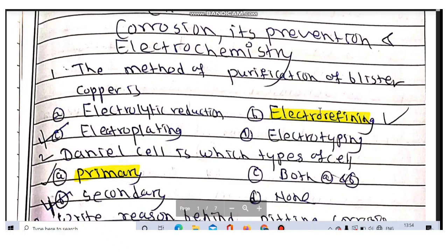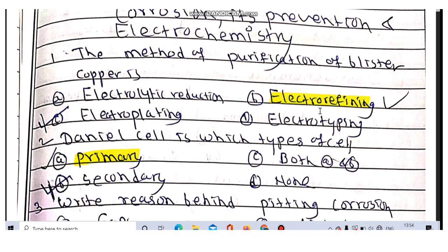Welcome students, now we are going to see some important MCQs for chapter 2 of basic chemistry. The name of the chapter is corrosion, its prevention, and electrochemistry. The first question is about the method of purification of blister copper, which is electro-refining.